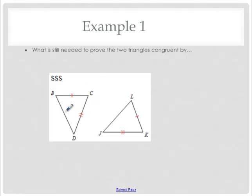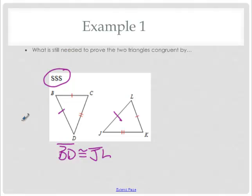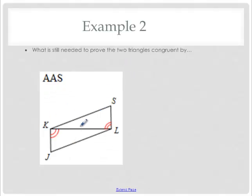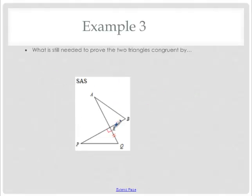For SSS I need all three sides, so BD has to be congruent to JL. For AAS with a reflexive side, I need angle S congruent to angle J — then these triangles would be congruent by angle, angle, side. For SAS, vertical angles are congruent; I have a side and an angle, so I need the corresponding side: AR congruent to PR — these triangles will be congruent by side, angle, side.